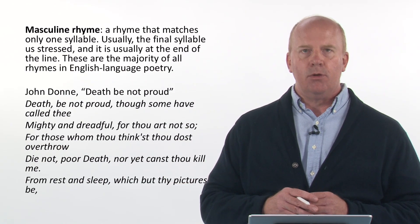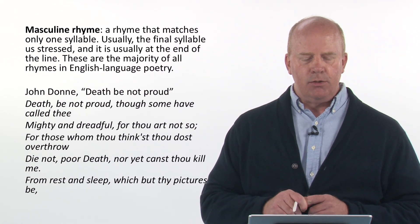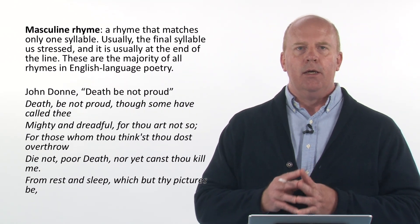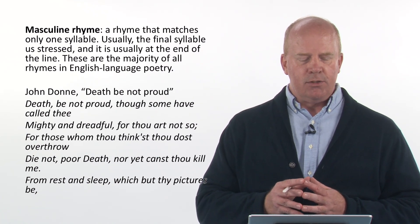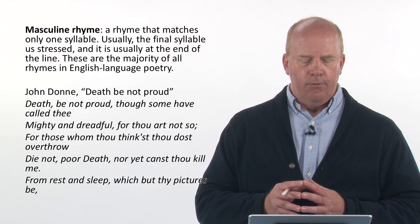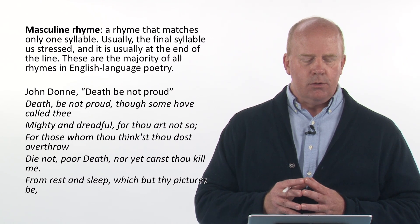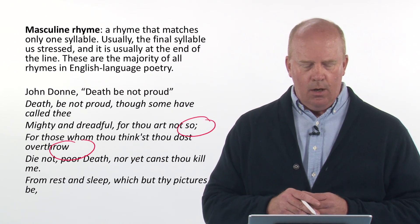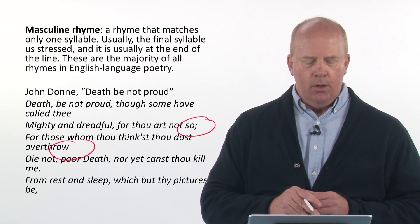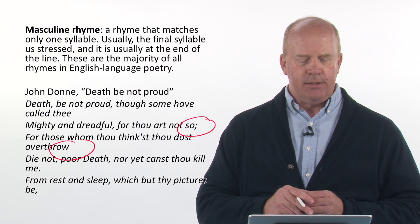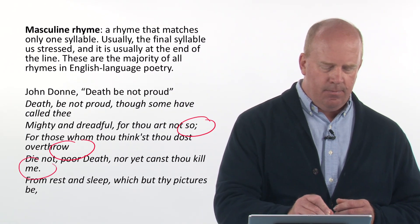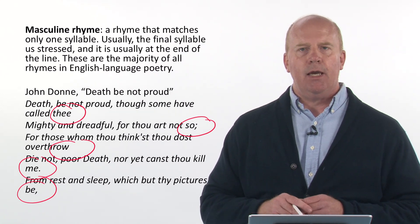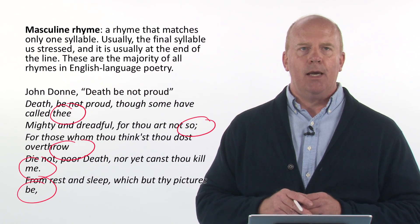A masculine rhyme matches only one syllable, and the final syllable is usually stressed. This is the majority of all English-language poetry. From John Donne's 'Death Be Not Proud': 'Death be not proud, though some have called thee mighty and dreadful, for thou art not so; for those whom thou think'st thou dost overthrow... die not, poor Death, nor yet canst thou kill me. From rest and sleep, which but thy pictures be...' 'So' and 'overthrow,' and 'be' and 'me' rhyme with the stress at the end — that's an example of a masculine rhyme.